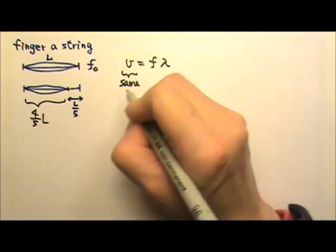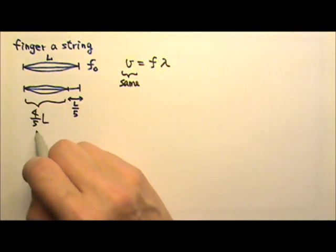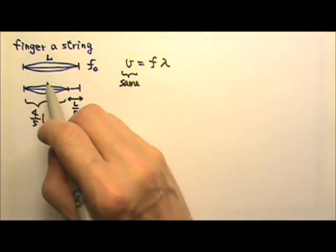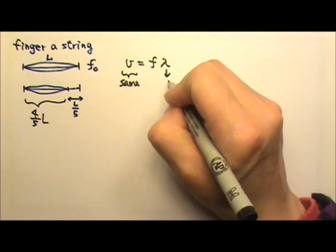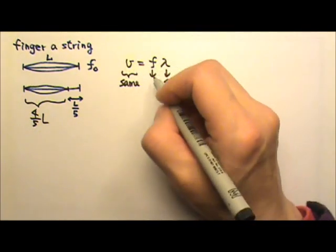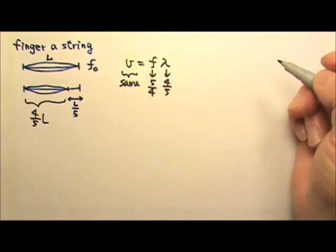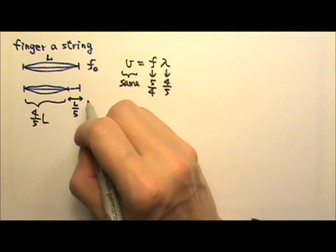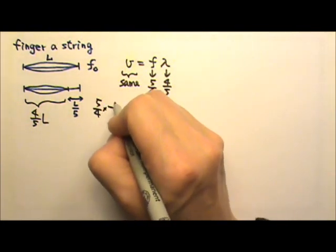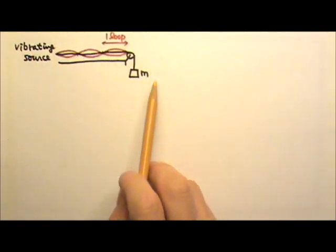So when the length of a loop becomes four-fifths of the previous value, the wavelength changes by the same factor. So the wavelength becomes four-fifths as well. Which means in order to maintain the same speed, the frequency must change to five-fourths the original value. So the new frequency we would hear is five-fourths times the original frequency.